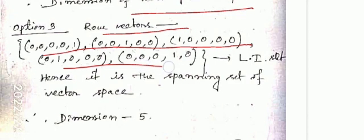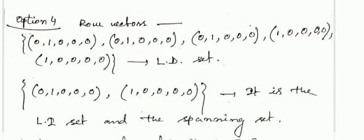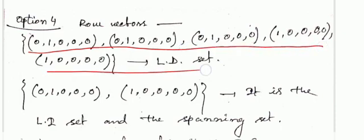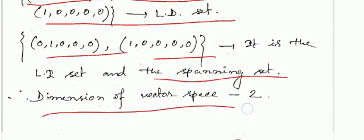For option three, the row vectors are a linearly independent set, hence it is the spanning set of the vector space, and the dimension equals five. For option four, the row vectors are a linearly dependent set, and the corresponding linearly independent spanning set gives a dimension of the vector space equal to two.